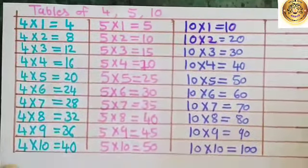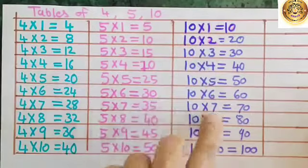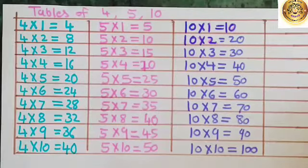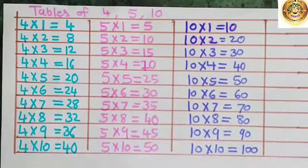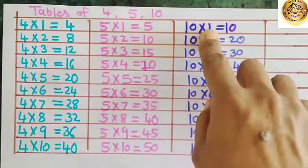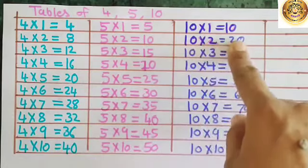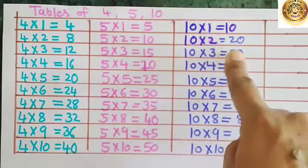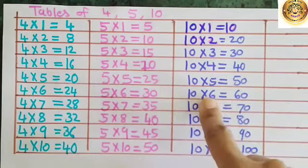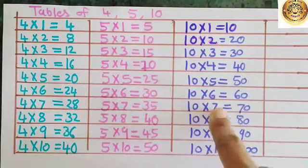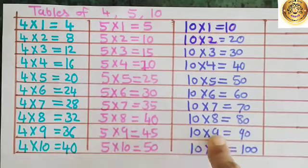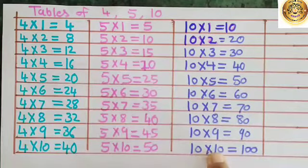Now you understand how to read the table. Like that, here is the 10 times table. To form it, you have to add 10 repeatedly. Let's read: 10 1s are 10. 10 2s are 20. 10 3s are 30. 10 4s are 40. 10 5s are 50. 10 6s are 60. 10 7s are 70. 10 8s are 80. 10 9s are 90. 10 10s are 100.